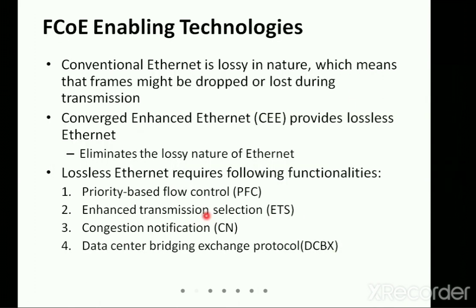What technologies are available to make FCoE more feasible for organizations? As you know, Ethernet is lossy by nature — some frames will be dropped, which is the main drawback. That is why we have TCP/IP and converged enhanced Ethernet with optical cables. To overcome the lossy nature of Ethernet, some functionalities have been added. The first is Priority-Based Flow Control, the second is Enhanced Transmission Selection, the third is Congestion Notification, and the last is Data Center Bridging Exchange Protocol.